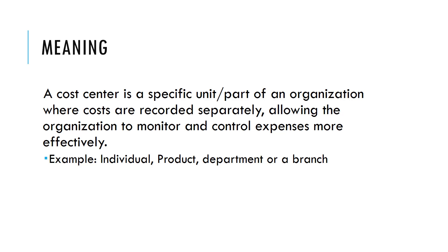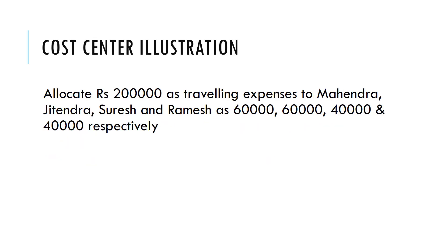We have a cost center illustration where we need to allocate two lakh rupees as traveling expenses to Mahindra, Jitendra, Suresh, and Ramesh as 60,000, 60,000, 40,000, and 40,000 respectively. These are four cost centers — Mahindra and Jitendra will be put under the sales team and the other two under the technical team. Traveling expenses is an indirect expense ledger that we'll create.